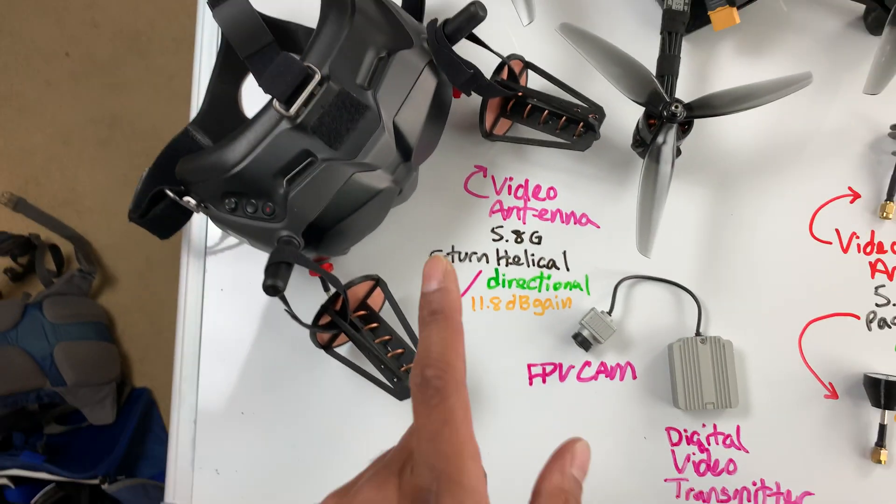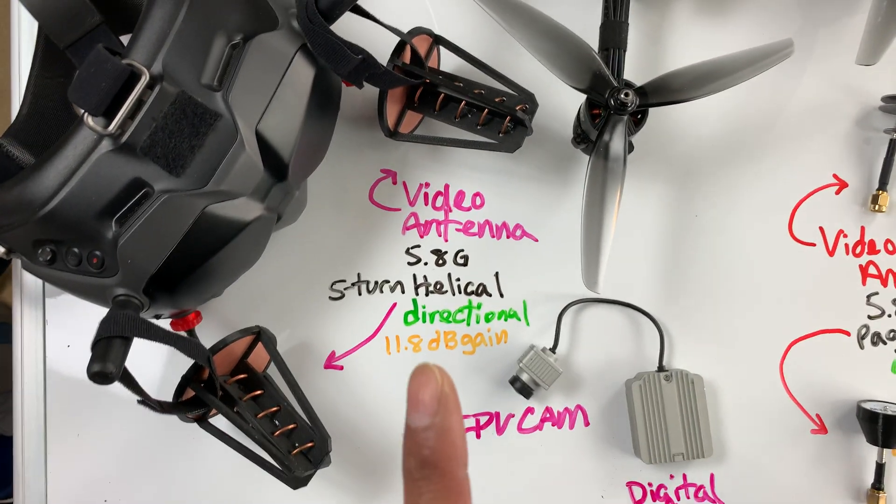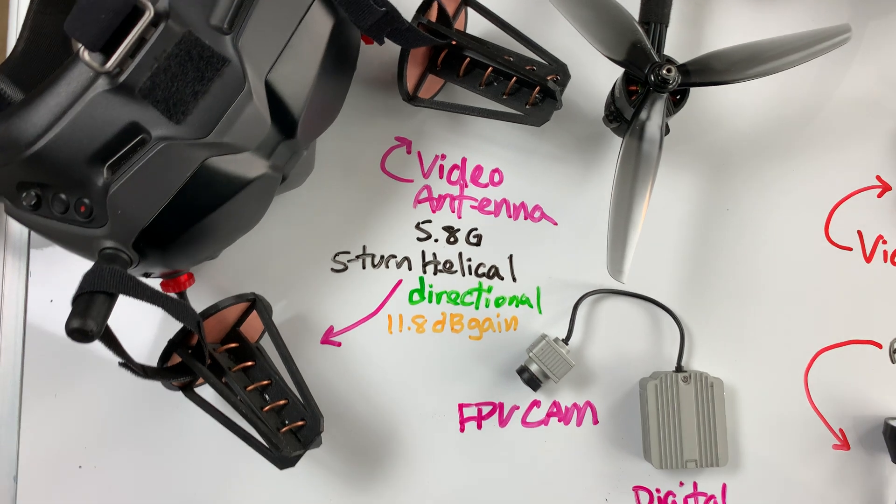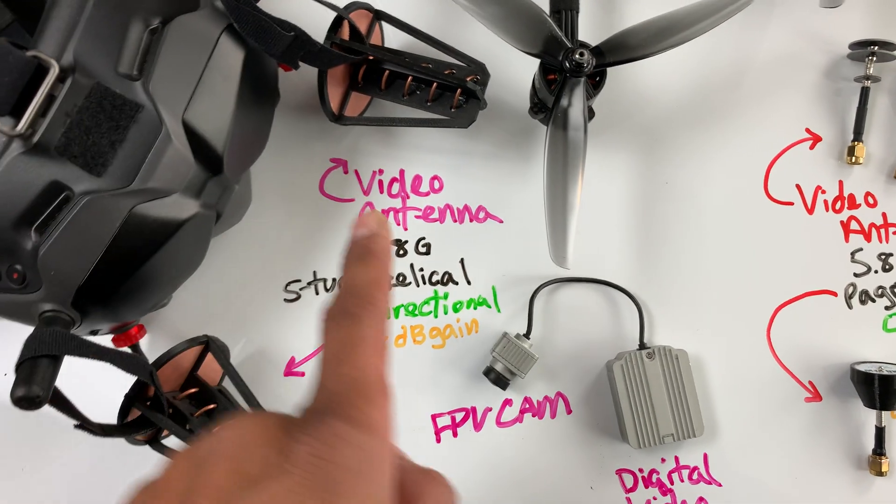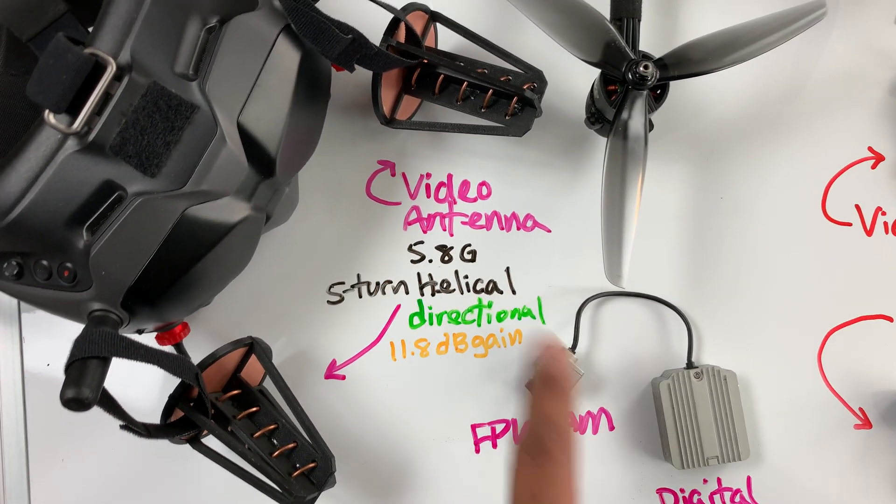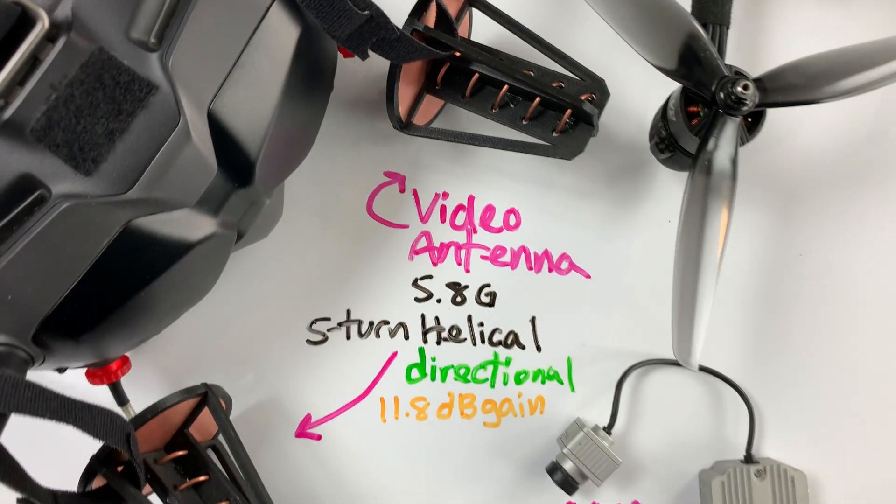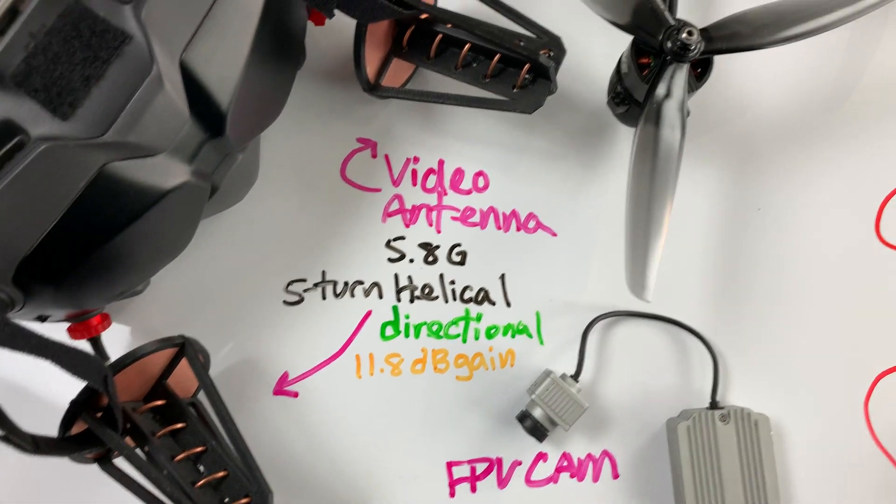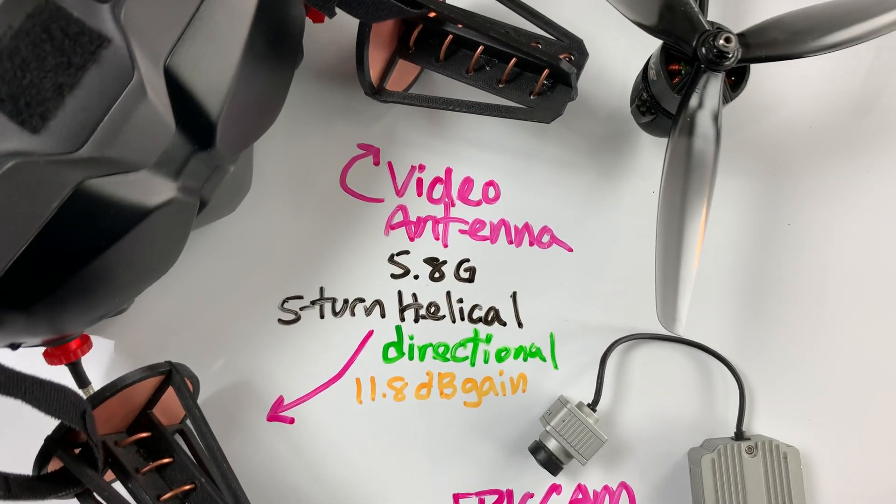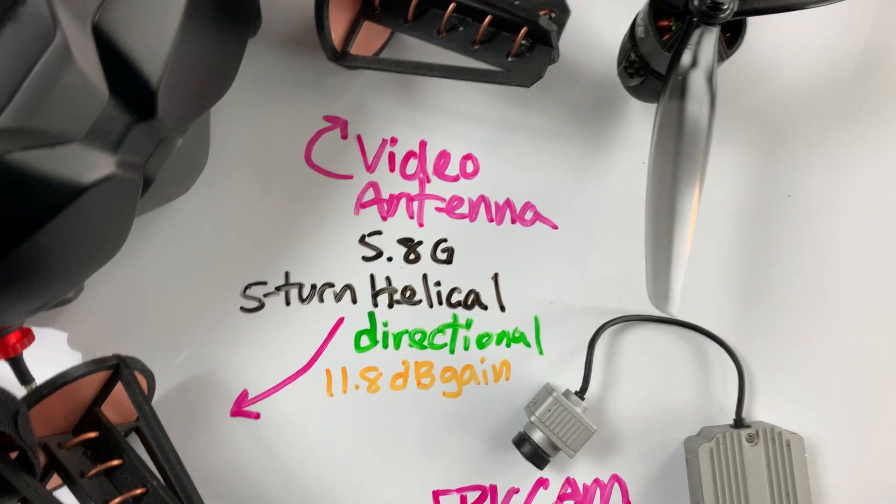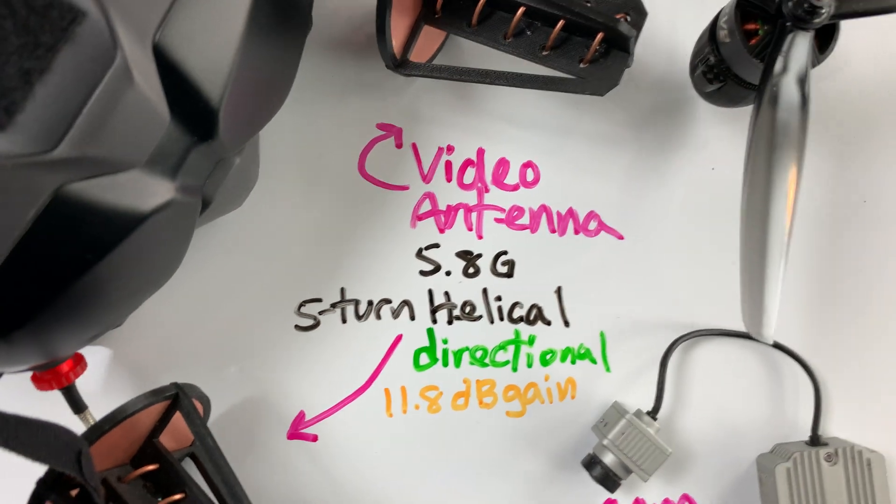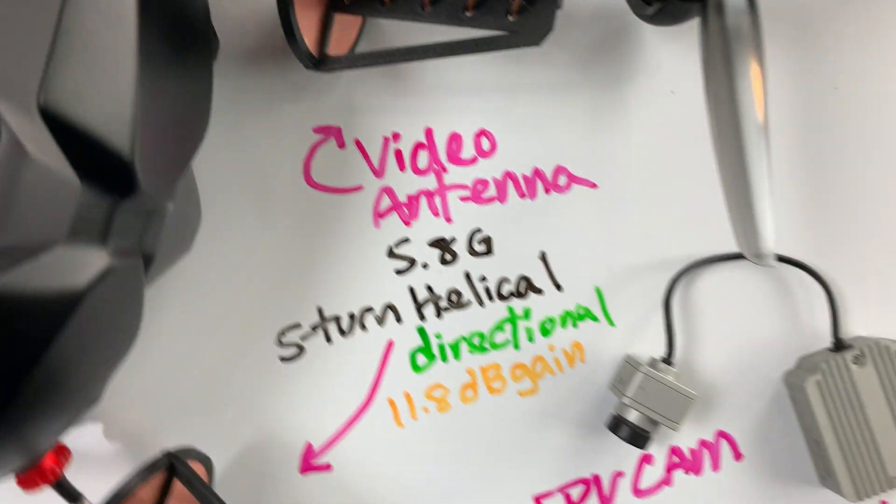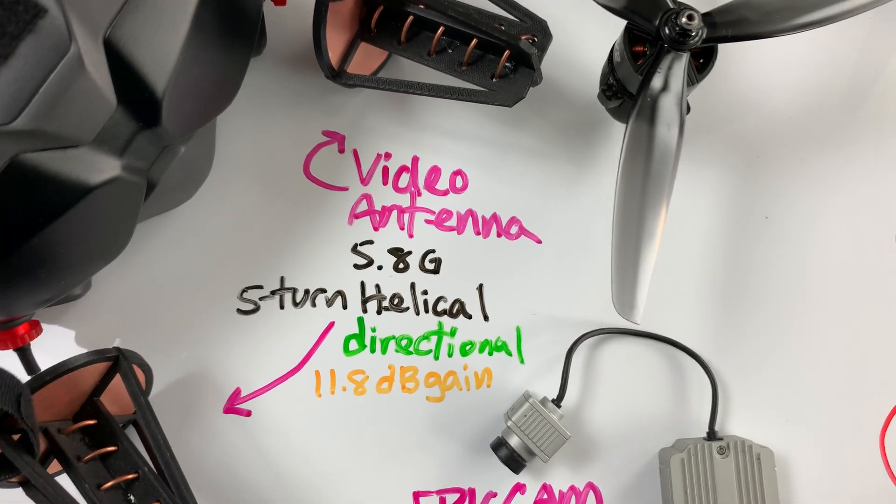So on the left here, I have my DJI digital video goggles. And on these, I have these video antennas. There are 5.8 gigahertz, five-turn helical antenna, and it's directional. You can see this pointed in a direction. So anything out in front of this is going to get 11.8 dB of gain. So that means it amplifies the signal a bit.